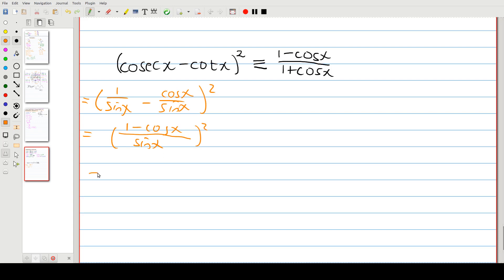Now we can square the bracket. So one minus cos x times one minus cos x. I'm just going to keep that for now. One minus cos x times one minus cos x at the top. At the bottom we've got sine x times sine x so that's sine squared x.